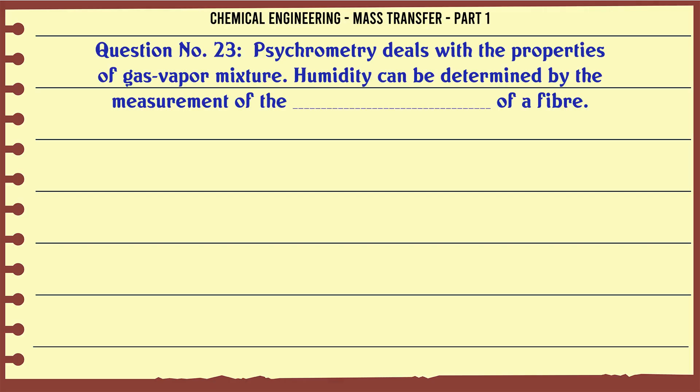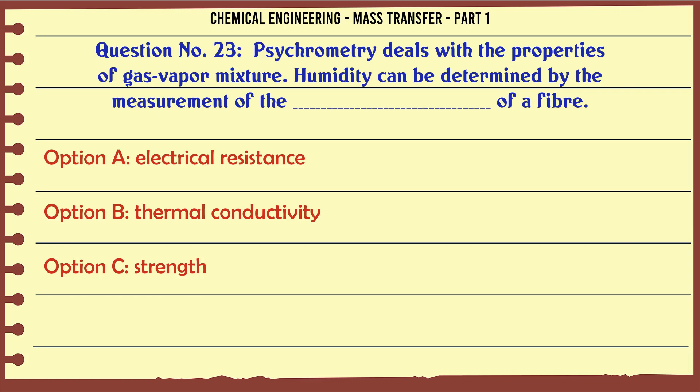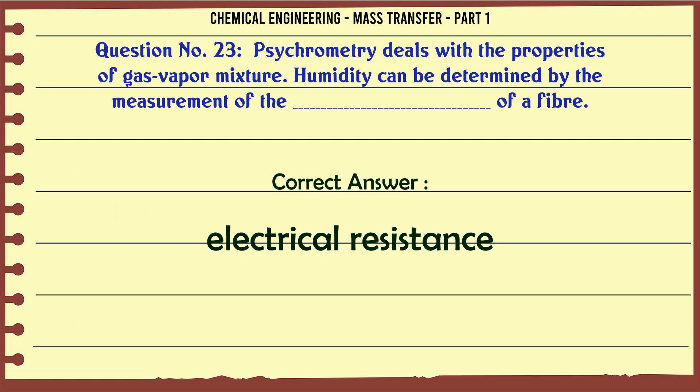Psychrometry deals with the properties of gas-vapor mixtures. Humidity can be determined by the measurement of the [electrical resistance] of a fiber. A. Electrical resistance. B. Thermal conductivity. C. Strength. D. None of these. The correct answer is Electrical resistance.